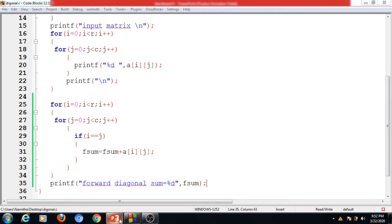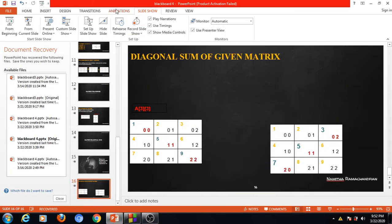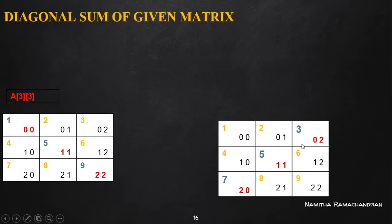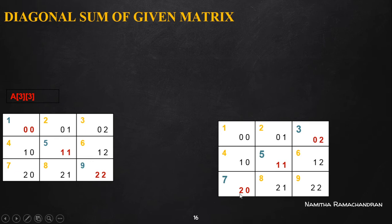Now we consider the other case — the backward diagonal. The backward diagonal elements of this given square matrix are 3, 5, and 7.